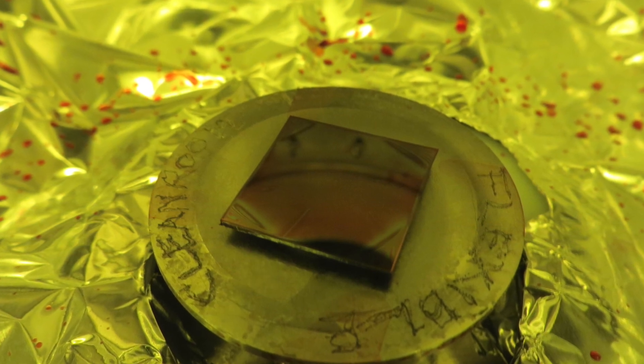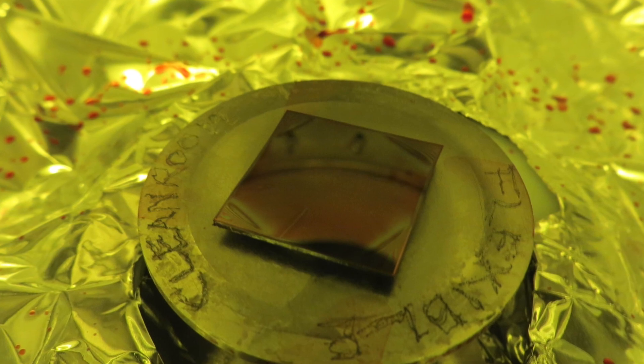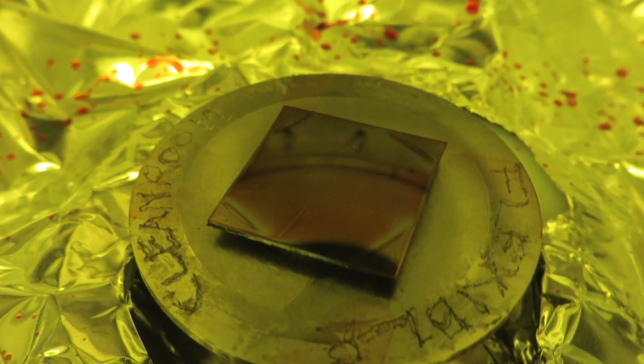If you notice your resist is all lumpy and uneven, then most likely you are allowing too much time between dispensing and spinning. If it sits on the chuck too long prior to spinning, the resist can gel up or get a skin on it which makes it spread unevenly.